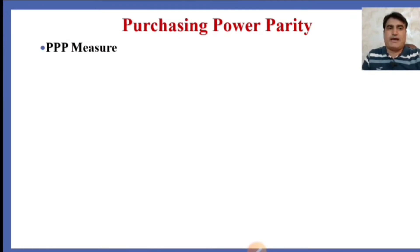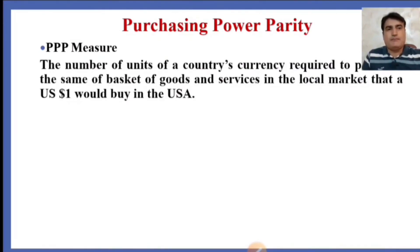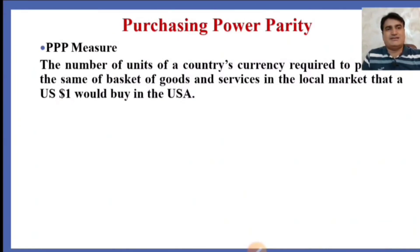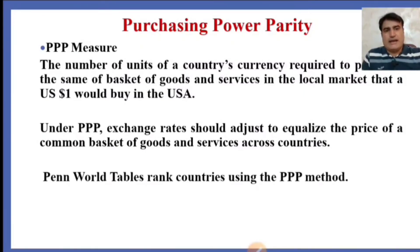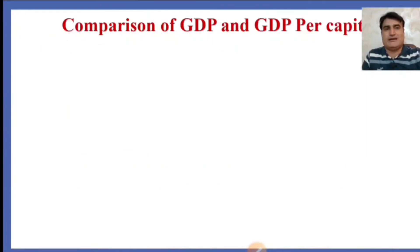Another measure is purchasing power parity. Purchasing power parity compares the differences in prices and computes the differences in purchasing power in different countries. It measures the number of units of a country's currency required to purchase the same basket of goods and services in the local market that one US dollar would buy in the USA. Under purchasing power parity, exchange rates should adjust to equalize the price of a common basket of goods and services across countries. The Penn World Table ranks countries using the purchasing power parity method.